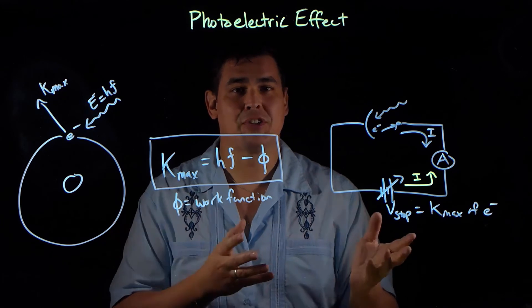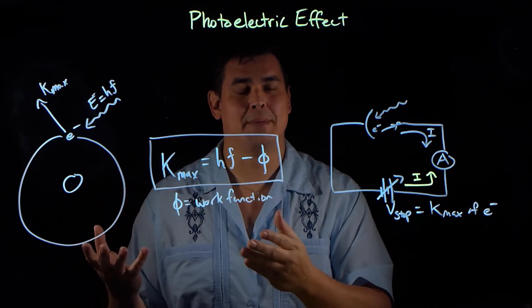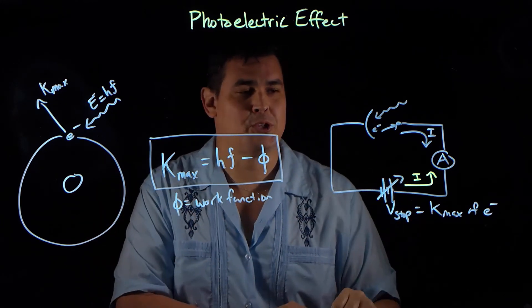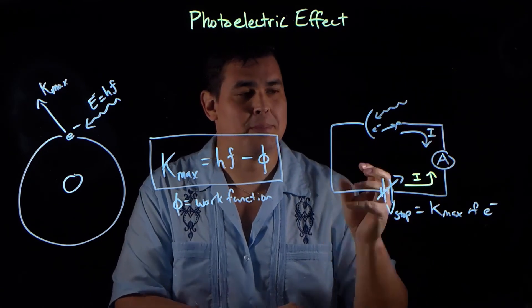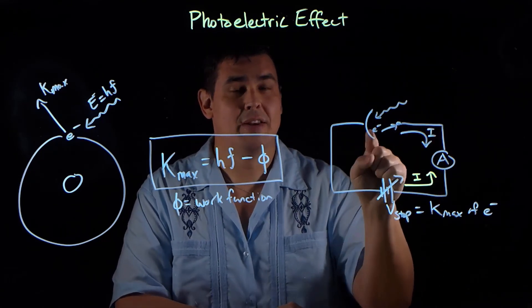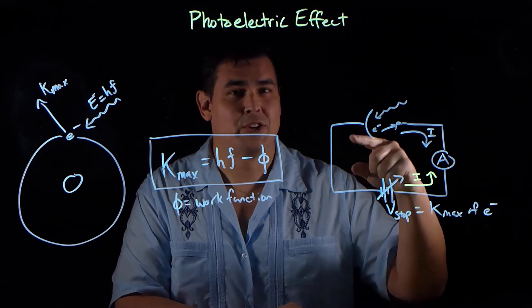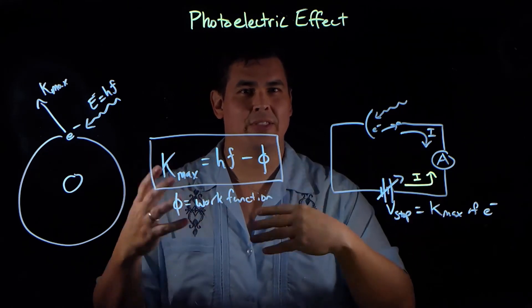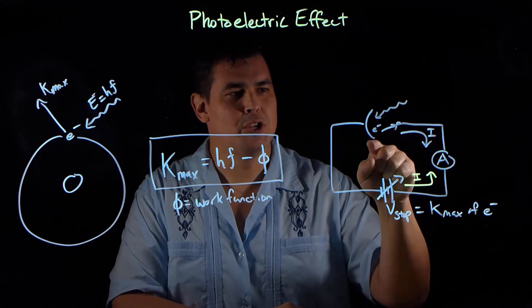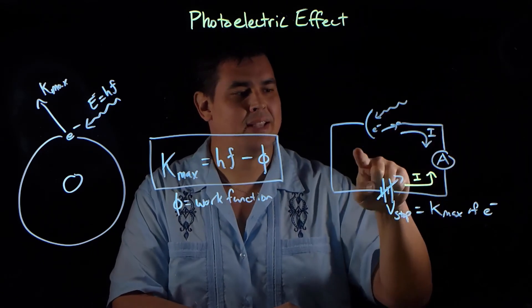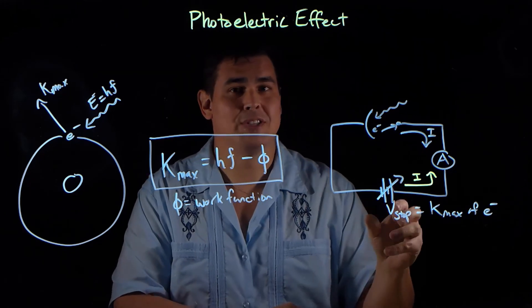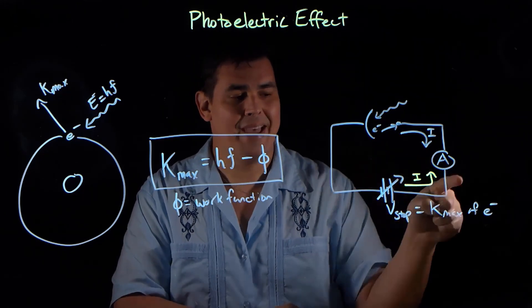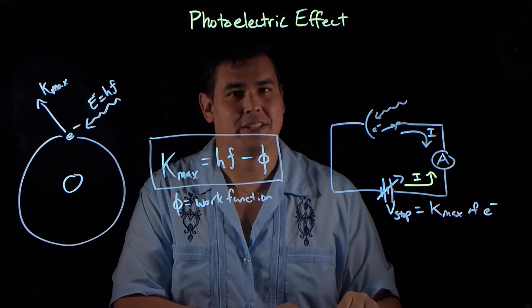So triggering hypothesis eventually died, and people kind of accepted Einstein's hypothesis, because the main problem with triggering was that if you say that this is only triggering the electron to jump, and the electron already has the energy, then if you heat this cathode up, that electron's going to have more energy, because it's hotter and the electron's moving around more. So you should be able to heat the cathode up, shine light, and see bigger stopping potential, which means kinetic energy. But they weren't seeing that. You could heat this cathode up, and that didn't change the energy of those ejected electrons.